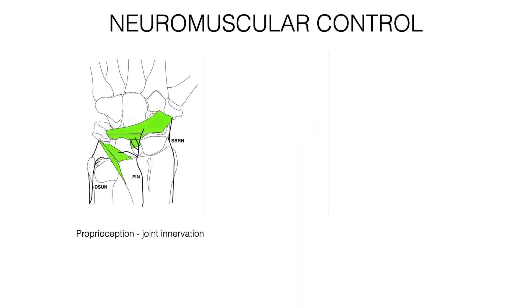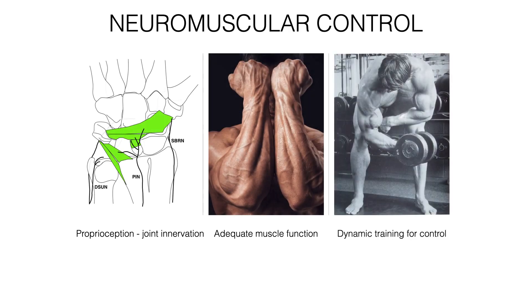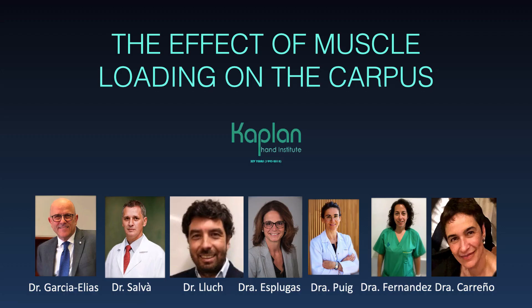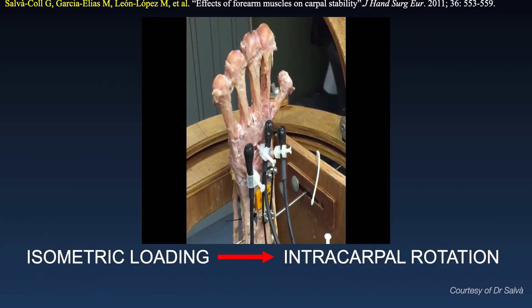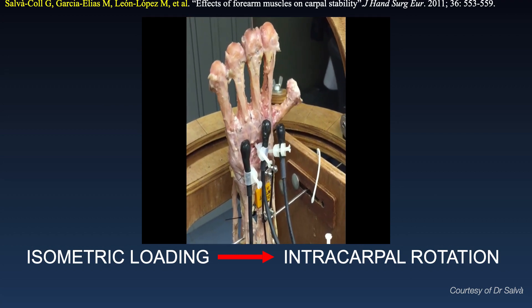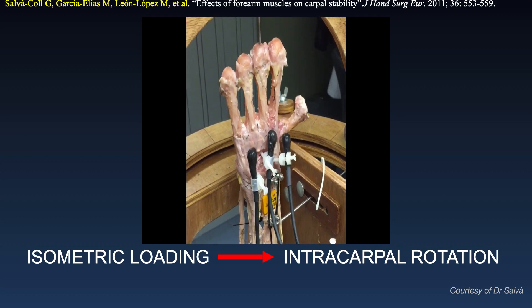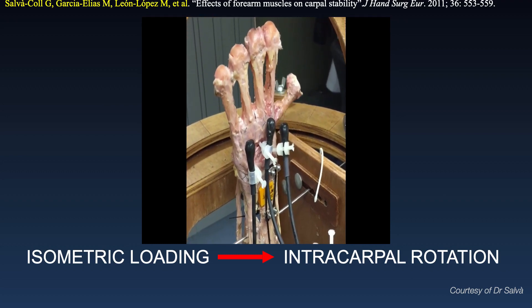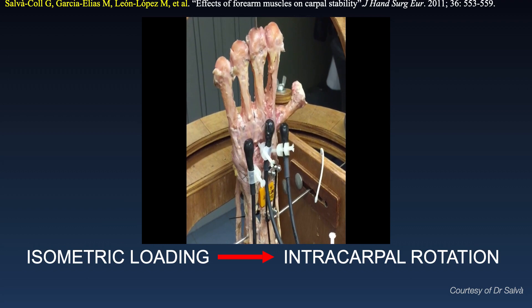Neuromuscular control of a joint is dependent on proprioception from joint innervation, adequate muscle function, and dynamic training for joint control. The effect of muscle control in the carpus has been thoroughly studied by colleagues at Institut Kaplan in Barcelona under the tutelage of Dr. Marc Garcia-Elias. What they found is that muscle action on the wrist not only causes wrist flexion and extension, or radial and ulnar deviation, but also an intracarpal rotation.